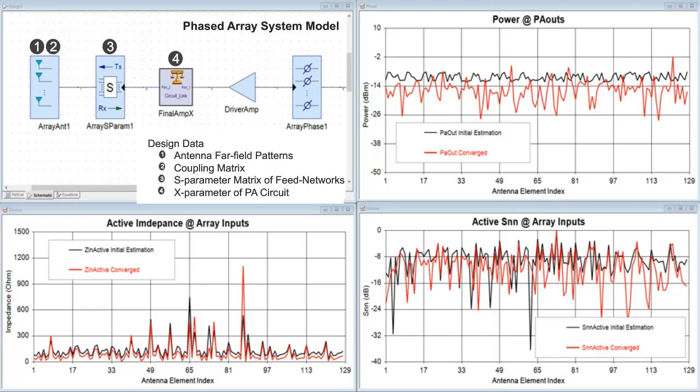The black trace in the active impedance graph is calculated based on the phased array theory. However, the calculation of active impedance may not always be possible with analytical expressions and its initial estimation does not represent actual active impedance. So, the real active impedance measurement is conducted by applying an iterative convergence approach, as we reviewed in the previous slide.